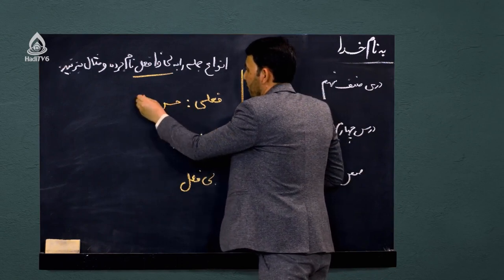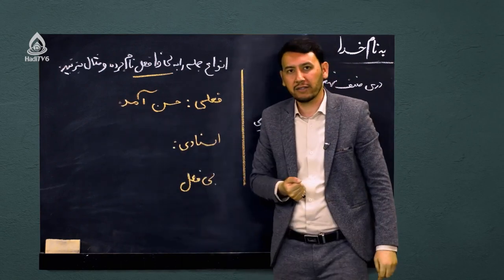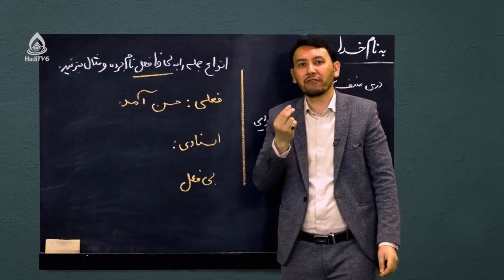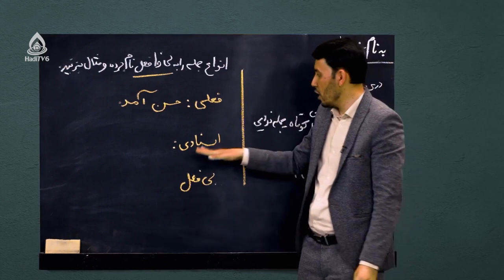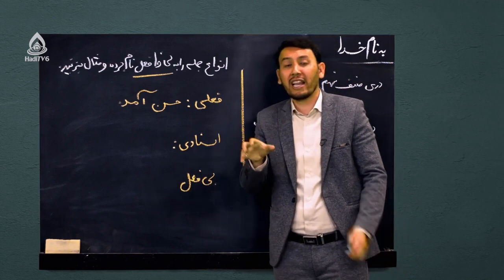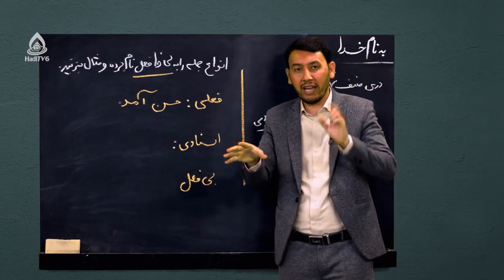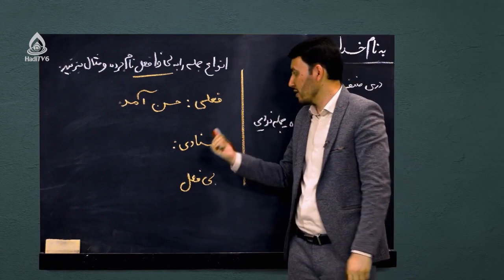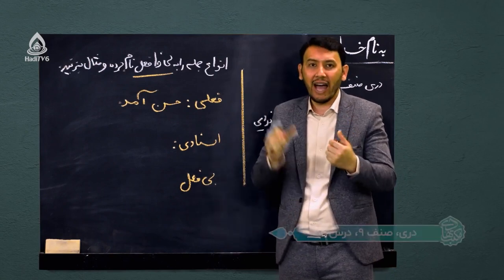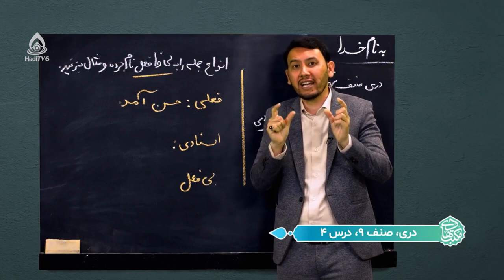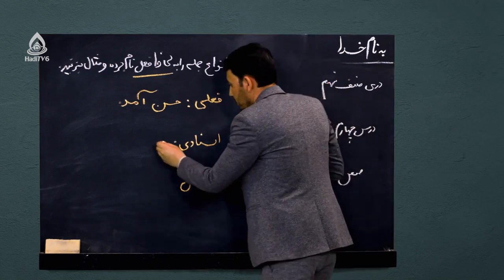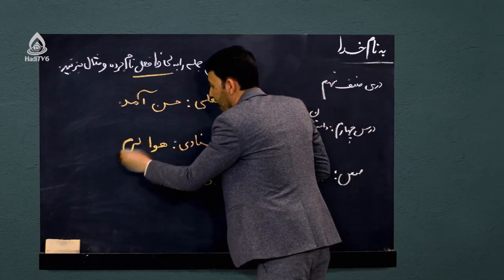جمله بی‌فعل جمله‌ای است که فعل ندارد. جمله فعلی جمله‌ایست که از فاعل و فعل تشکیل شده باشد. مثلاً می‌گوییم «حسن آمد» یک جمله فعلیست؛ «من کتاب را برداشتم» یک جمله فعلیست. جمله اسنادی جمله‌ایست که سه جز دارد: مسند، مسندالیه، و رابطه. گفتیم که جمله اسنادی دو فعل مشخص دارد: یکی «است» و یکی «شد» که فقط در جمله‌های اسنادی می‌آیند.